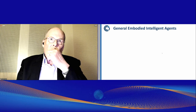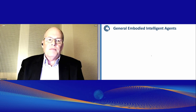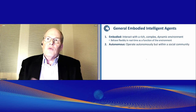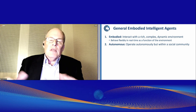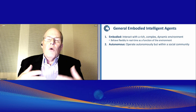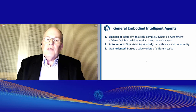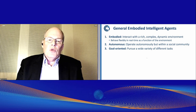Let me start with what I'm looking for as a goal for AI and my own research: general embodied intelligent agents. These are agents that are embodied, interact with a rich, complex, dynamic world, and can behave flexibly in real time. They're autonomous — not systems where we stop them, reprogram them, or have them learn a little and then reprogram again. Our goal is to have these systems have an ongoing existence where they operate and learn autonomously and potentially work in a social community. They have goals — not a fixed pre-programmed set, but they can learn and pursue new tasks over time.